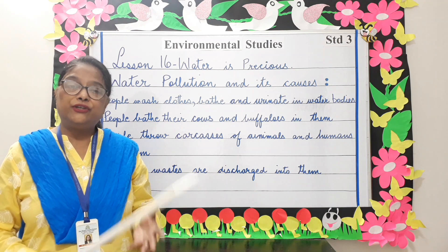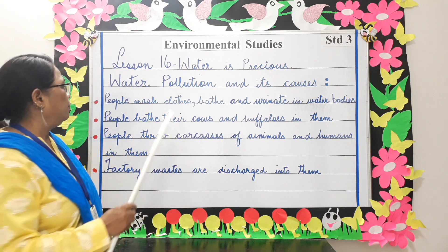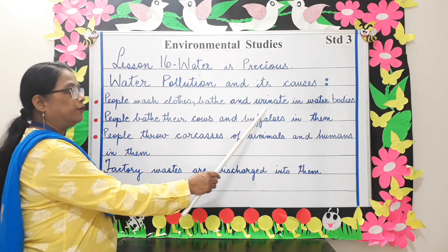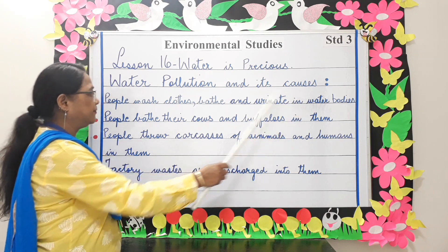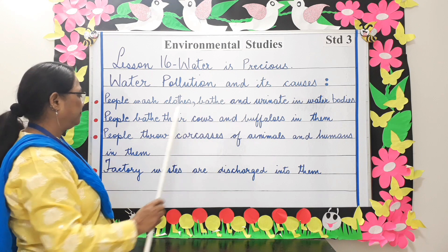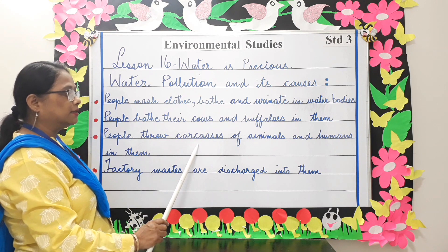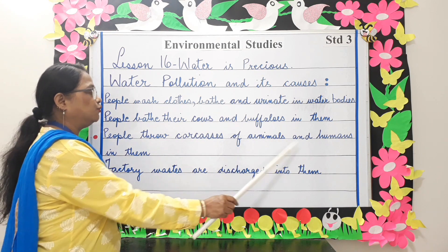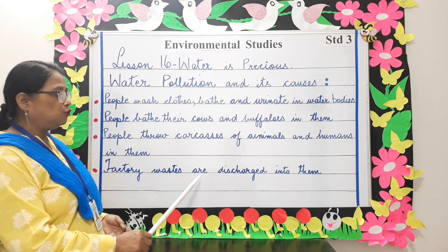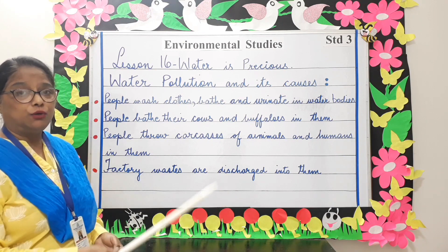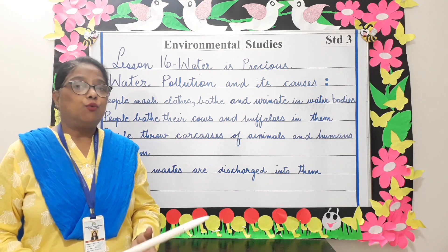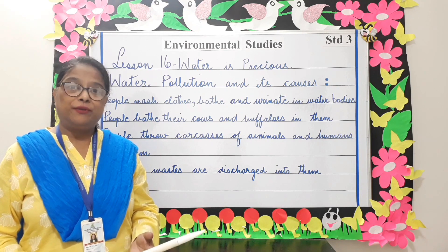To reduce water pollution, we can stop washing clothes, bathing, or urinating in water bodies. People should stop bathing their cows and buffaloes in them, and stop throwing carcasses of animals and humans in them. Factory wastes need to be treated before being discharged into water bodies. It is very important to reduce water pollution in order to remain healthy.